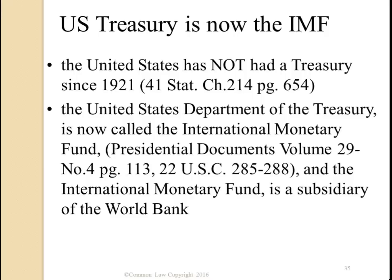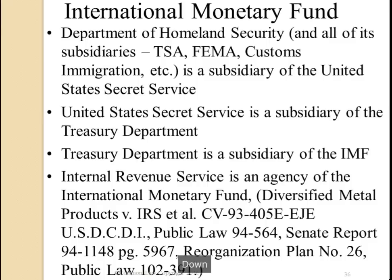This is all made possible because of Roman law, the United Nations, the Vatican, and your ignorance. Because you accept Federal Reserve Notes, Bank of Canada Notes, Bank of England Notes as compensation for your labor, the kangaroo courts can presume that you're a government employee. The United States has not had a treasury since 1921 — that's at 41 Stat 214, page 654. The United States Department of the Treasury is now called the International Monetary Fund, per present documents, volume 29, number 4, page 113, and 22 USC 285 to 288.